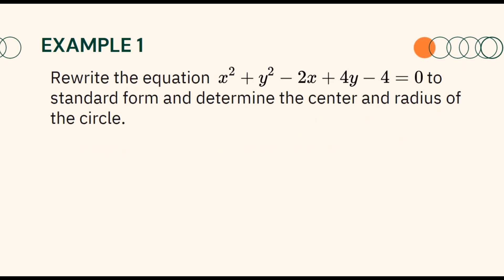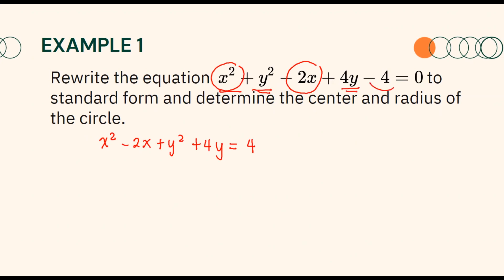To rewrite a general form of an equation in standard form, we first regroup our given equation. We regroup the terms according to variables and isolate the constant term to the right side of the equation. Therefore, we will have x squared minus 2x plus y squared plus 4y equals positive 4. We regroup our terms according to the variable, writing the x terms together and the y terms together, with the constant isolated on the right side of the equation.